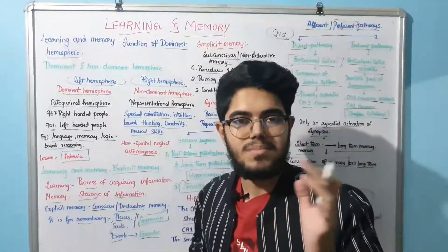Learning is the process of acquiring information. Memory is the storage of that information in the brain. Memory is classified into explicit memory and implicit memory.